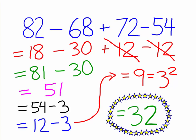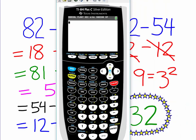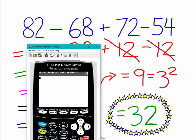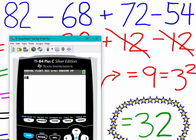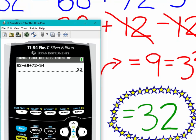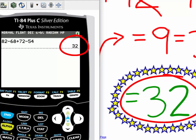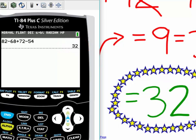All right. And just in case you question the veracity of this technique, let me go ahead and bring up a calculator and let's check our answer. 82 minus 68 plus 72 minus 54. There you go. So, you see that our work was correct? Works every time like a charm.